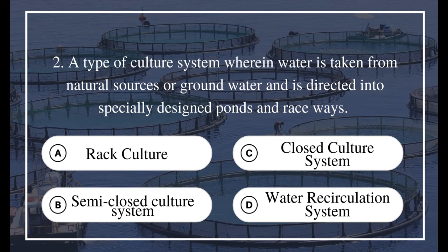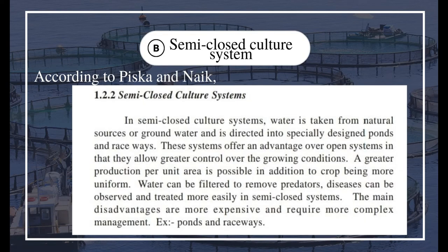Question 2: A type of culture system wherein water is taken from natural sources or groundwater and is directed into specially designed ponds and raceways. A) rack culture, B) semi-closed culture system, C) closed culture system, D) water recirculation system. The answer is B) semi-closed culture system. According to Pisca and Noack, in semi-closed culture systems, water is taken from natural sources or groundwater and directed into specially designed ponds and raceways. These systems allow greater control over growing conditions and greater production per unit area.